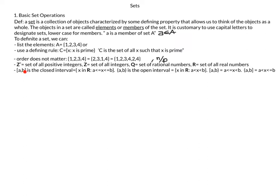The closed interval [A, B] includes the endpoints and is defined as X in R such that X is greater than or equal to A and less than or equal to B. The open interval (A, B) is defined as X in R such that X is strictly greater than A and strictly less than B. We also have half-open, half-closed intervals: if the parenthesis is on B, X is strictly less than B but greater than or equal to A; if the bracket is on B, X is strictly greater than A but less than or equal to B.